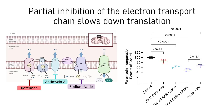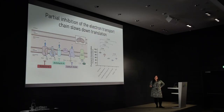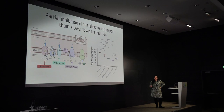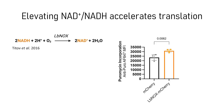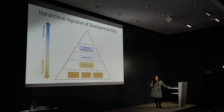We then asked whether the electron transport chain inhibitors work through translation rate. The inhibitors that progressively slowed the segmentation clock also led to a progressive decrease in translation rate as measured by puromycin incorporation, and translation partially recovered in the pyruvate rescue experiment. In the gain-of-function LBNOX experiment where NAD/NADH ratio was increased to accelerate the clock, puromycin incorporation rate was also slightly increased, linking NAD/NADH redox balance to translation rate.